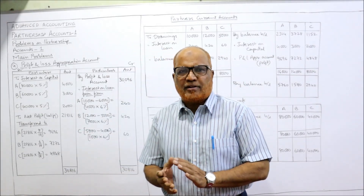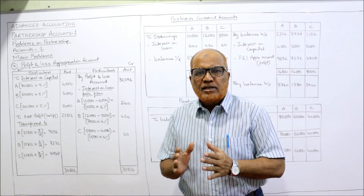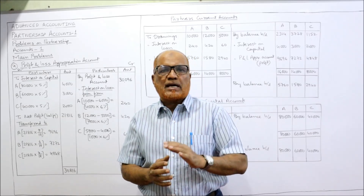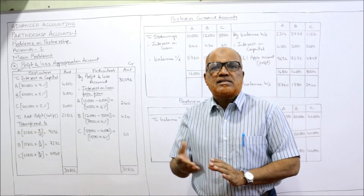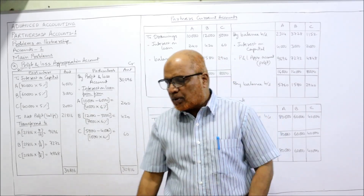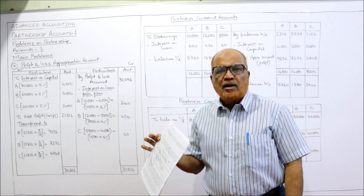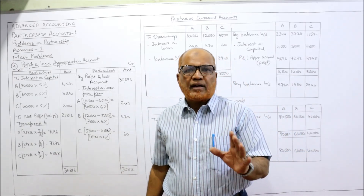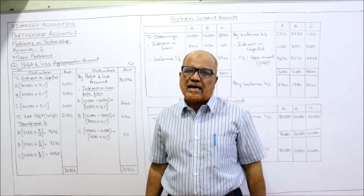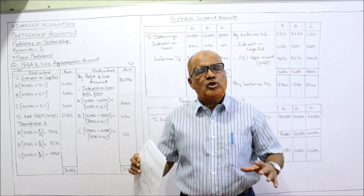Hello everyone, welcome to my channel. I'm Hashem Ali Khan. So far, three problems on partnership accounts have been completed. In this video, I'm going to explain the fourth problem. In all these problems, we are preparing the profit and loss appropriation account, current account, capital account, etc. I expect viewers to have a printout of the problems from the link in my description. If you haven't watched earlier videos, go to the playlist, select advanced accounting, select partnership accounts, and watch all the videos.